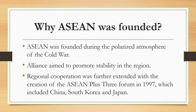ASEAN was founded half a century ago in 1967 by five Southeast Asian nations: Indonesia, Malaysia, Philippines, Singapore, and Thailand. The organization was founded during the polarized atmosphere of the Cold War, and the alliance aimed to promote stability in the region. Over time the group expanded to include its current 10 members. Regional cooperation was further extended with the creation of the ASEAN Plus Three forum in 1997, which included China, South Korea, and Japan.